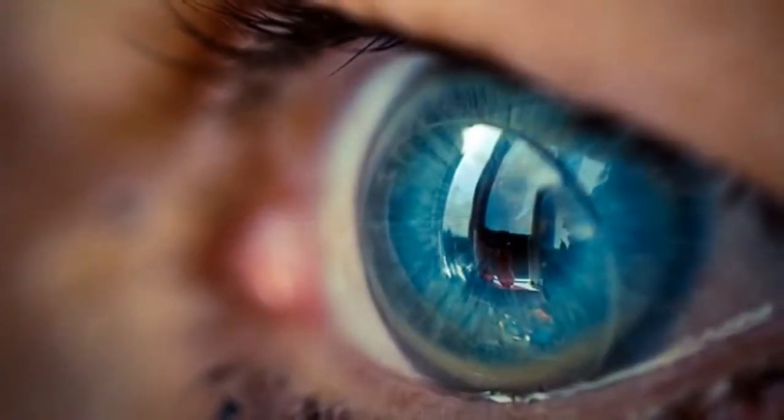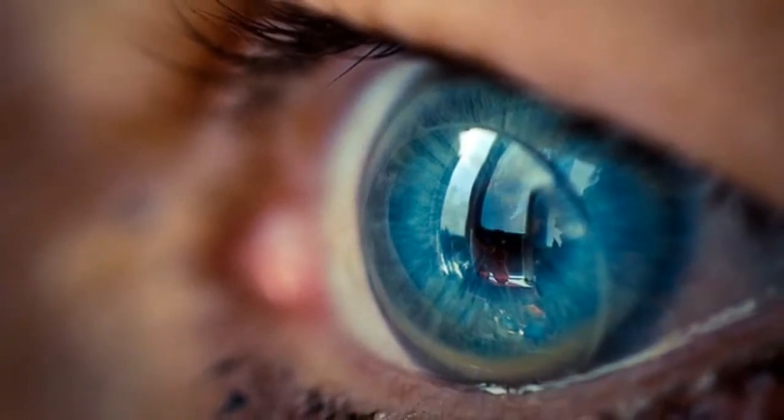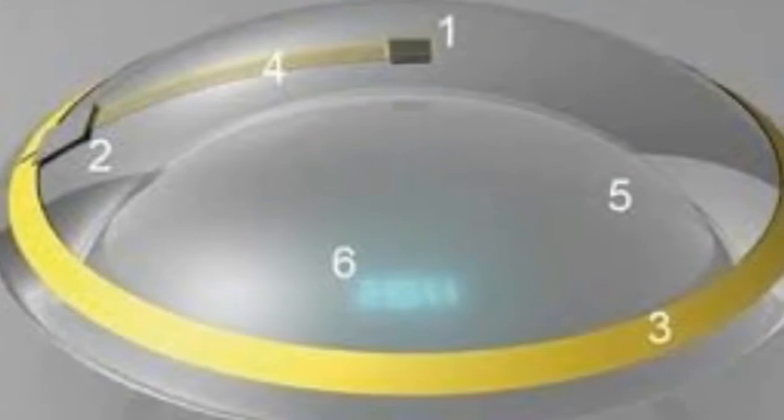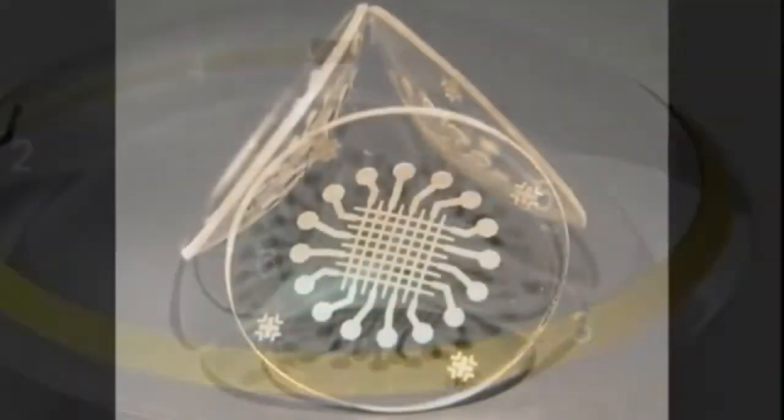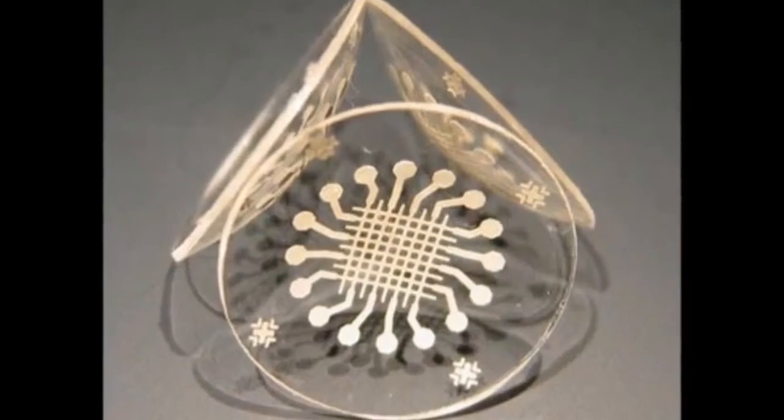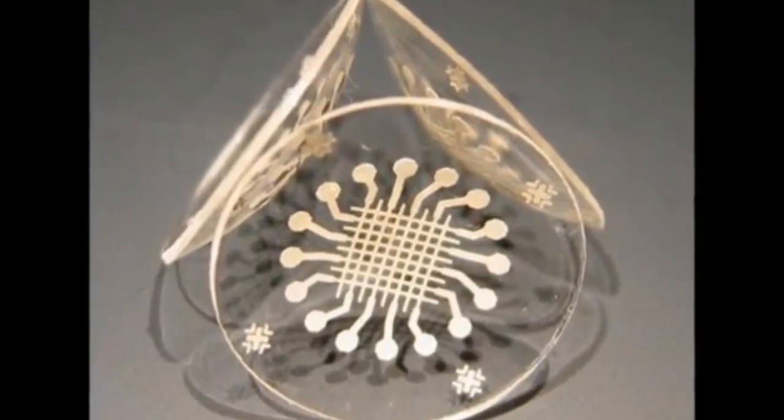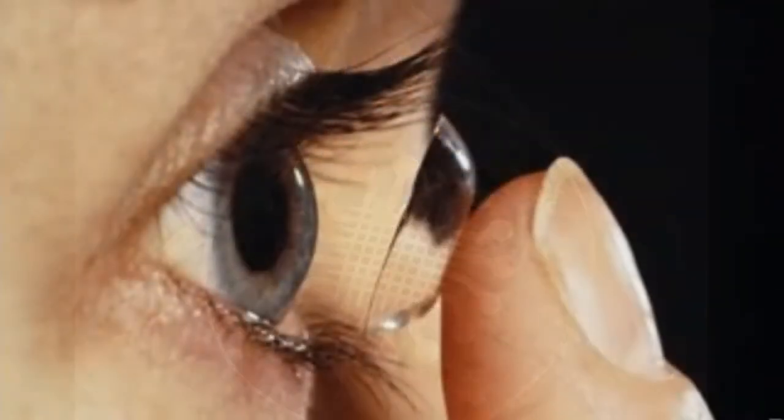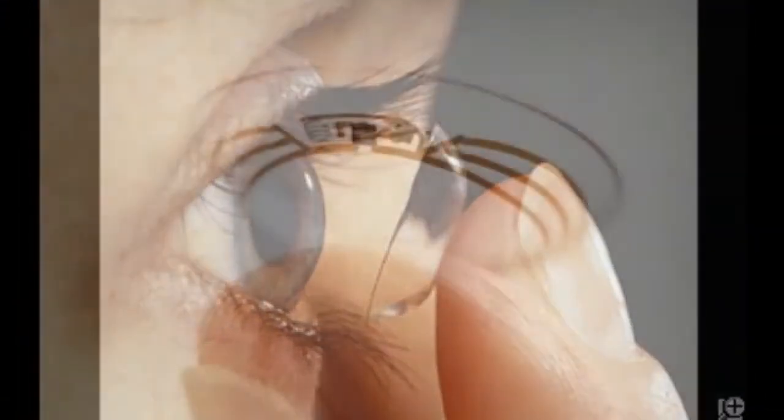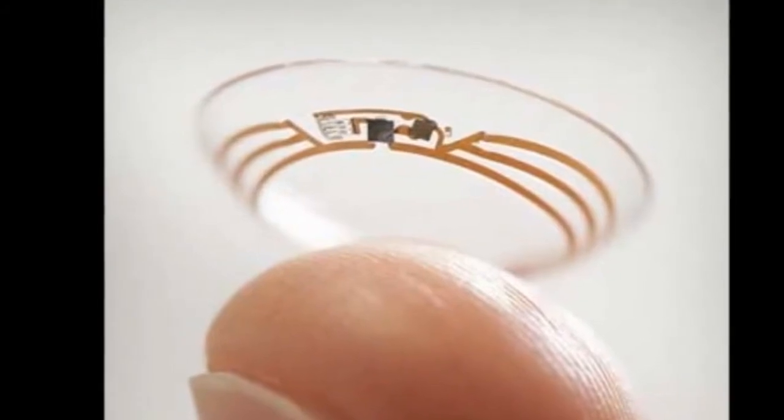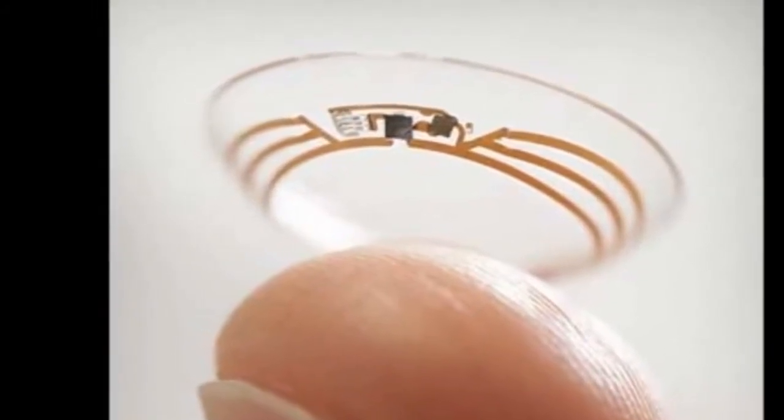The lenses use a miniscule glucose sensor and a wireless transmitter to help those among the world's 382 million diabetics who need insulin keep a close watch on their blood sugar and adjust their dose. The contact lenses were developed during the past 18 months in the clandestine Google X lab that also came up with a driverless car, Google's web surfing eyeglasses, and Project Loon, a network of large balloons designed to beam the internet to unwired places.